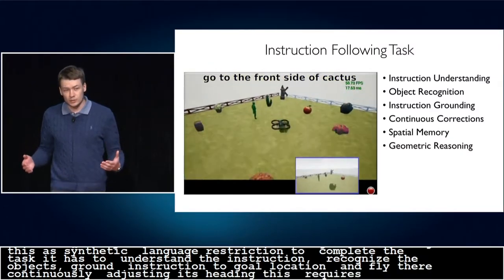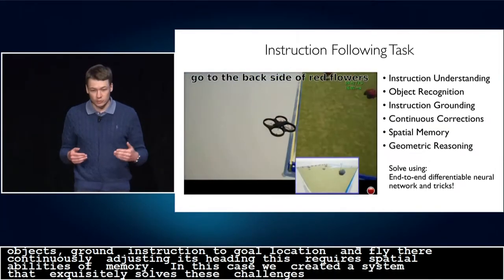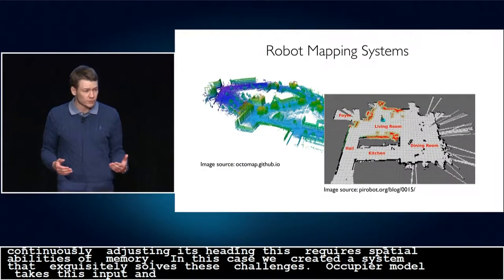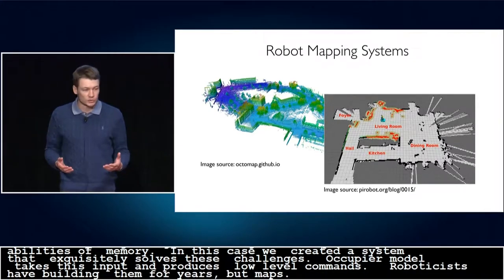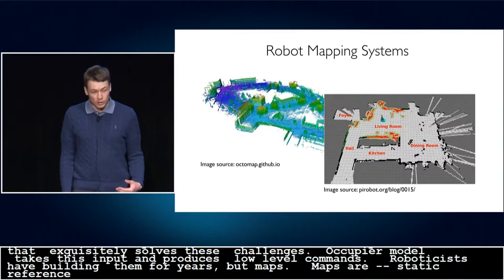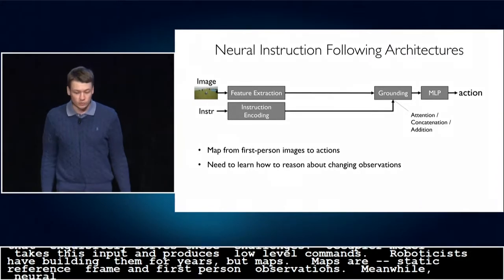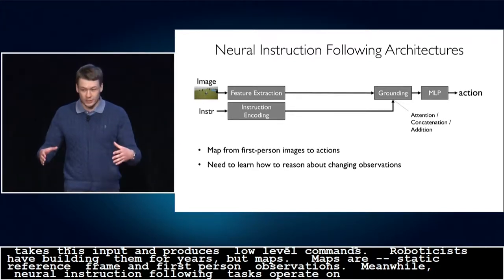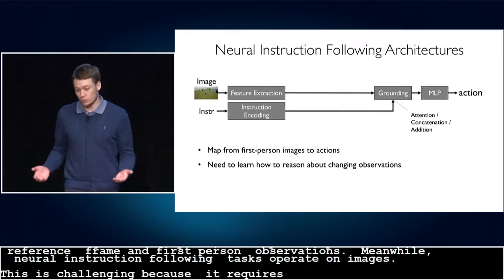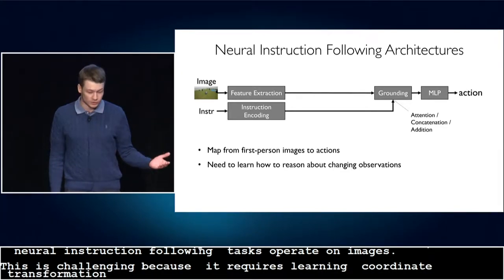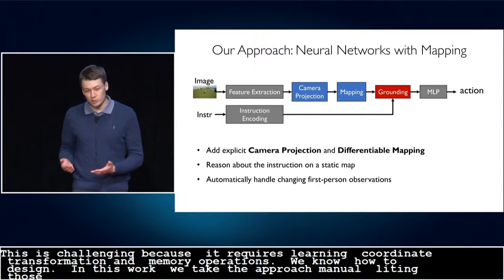In this work, we build an end-to-end neural network system that explicitly solves these challenges. Our model takes as input first-person camera images and pose estimates and produces low-level velocity commands. Roboticists have been building functional systems to reason spatially for years by building maps. Maps allow reasoning in a static reference frame and avoid dealing with constantly changing first-person observations. Meanwhile, most neural network systems for visual motor and instruction-following tasks operate on first-person images. As a result, neural network layers have to learn how to map from first-person view to some static reference frame if they are to build a model. This is challenging because it requires learning coordinate transformations and memory operations, which are actually things that we know how to design. So in this work, we take the approach of manually engineering those parts of the system that we know how to design while using machine learning for the things that are hard.